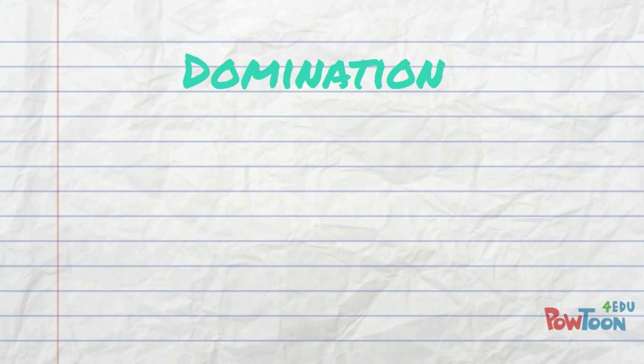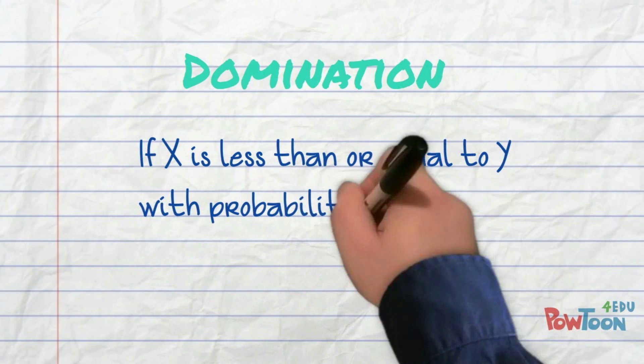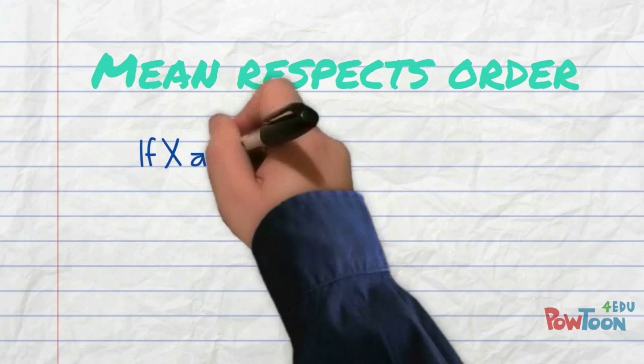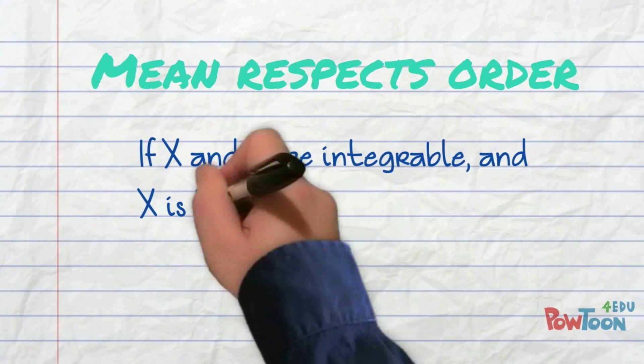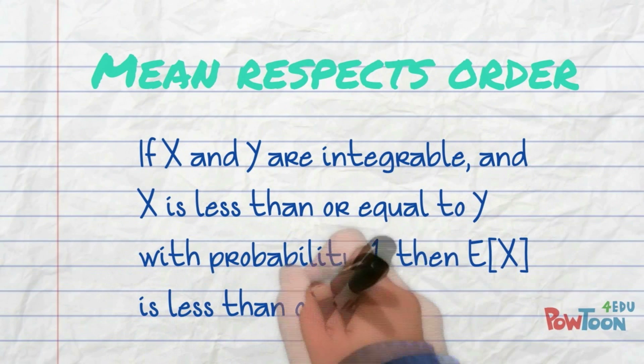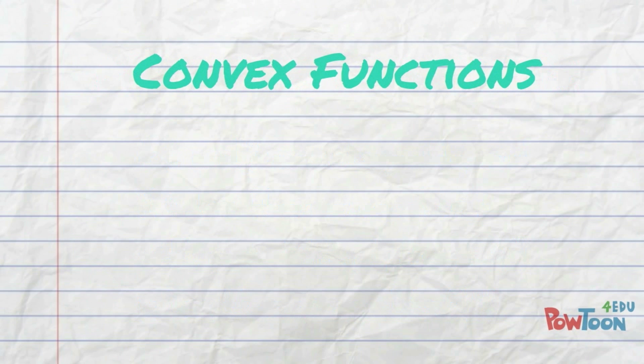Another important fact about expected value is that it respects the order of less than or equal to. If I have a random variable x that is less than or equal to y with probability 1, then I say that the random variable y dominates the random variable x. If x and y are integrable, then x less than or equal to y implies that the mean of x is less than or equal to the mean of y.